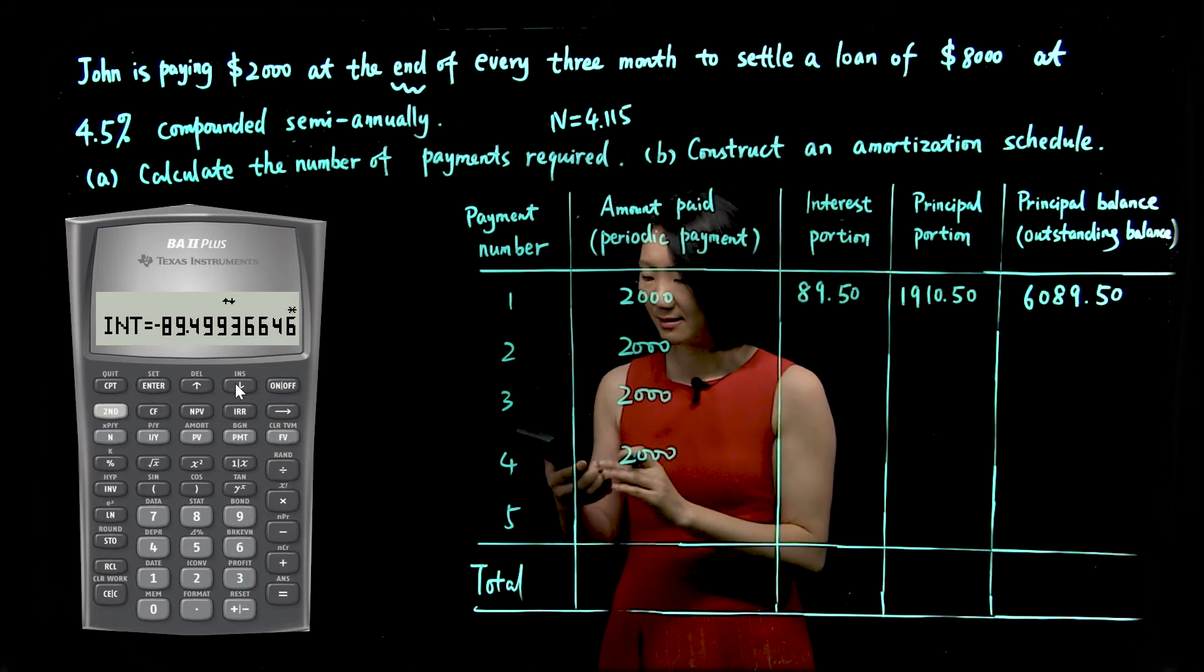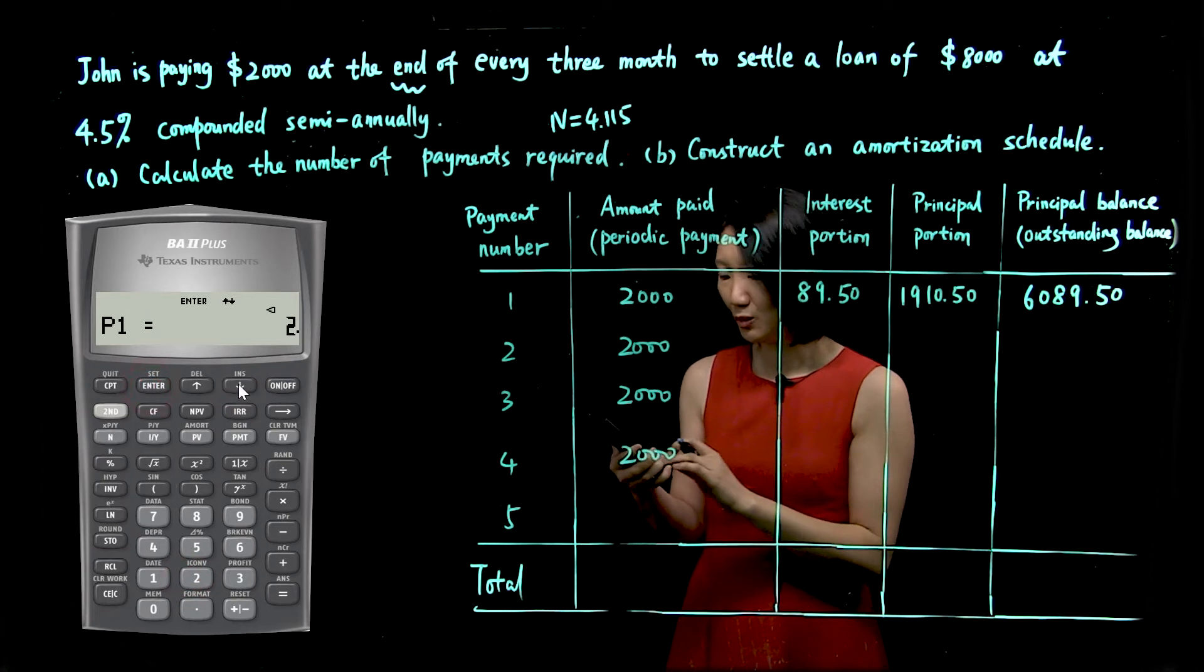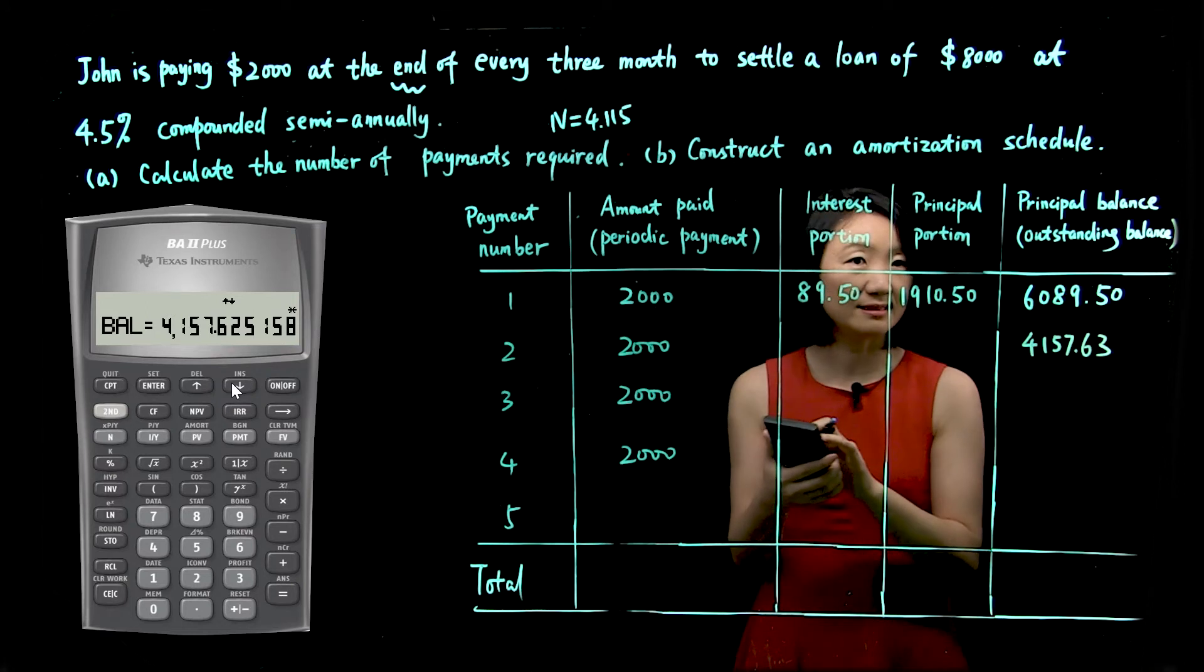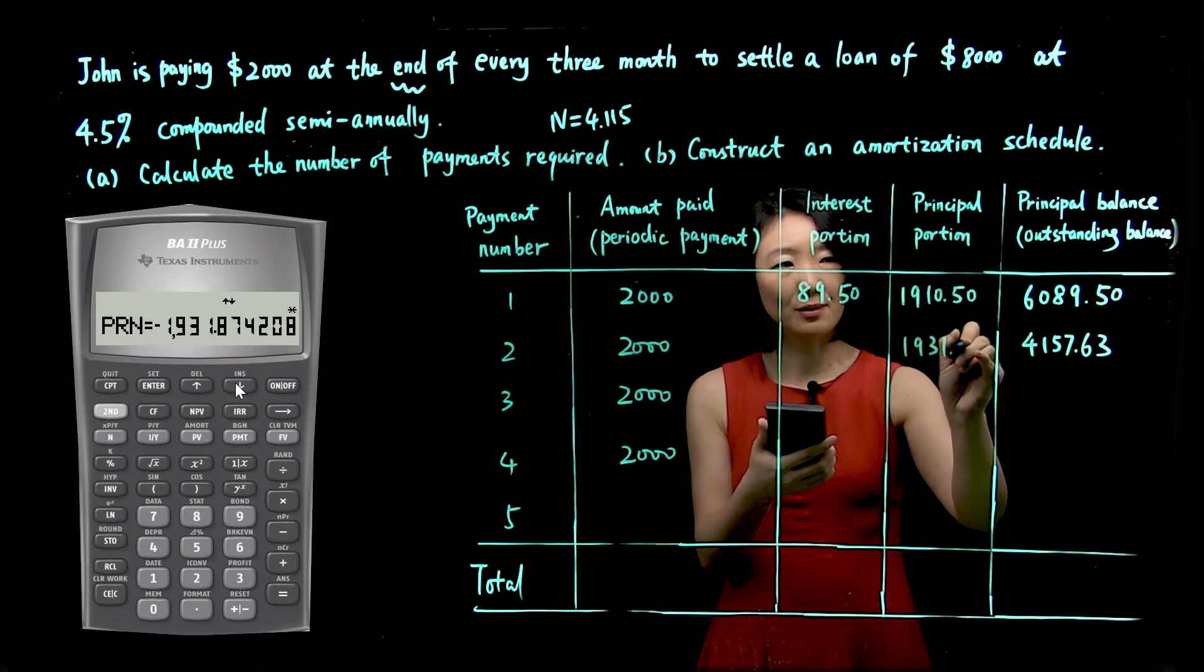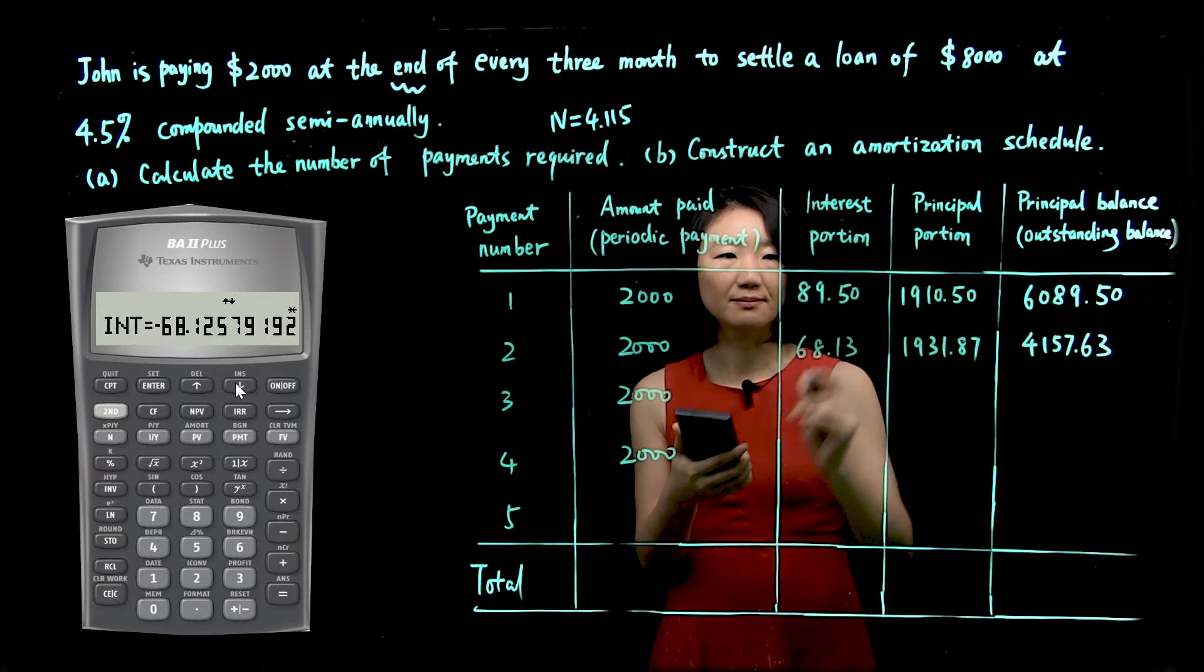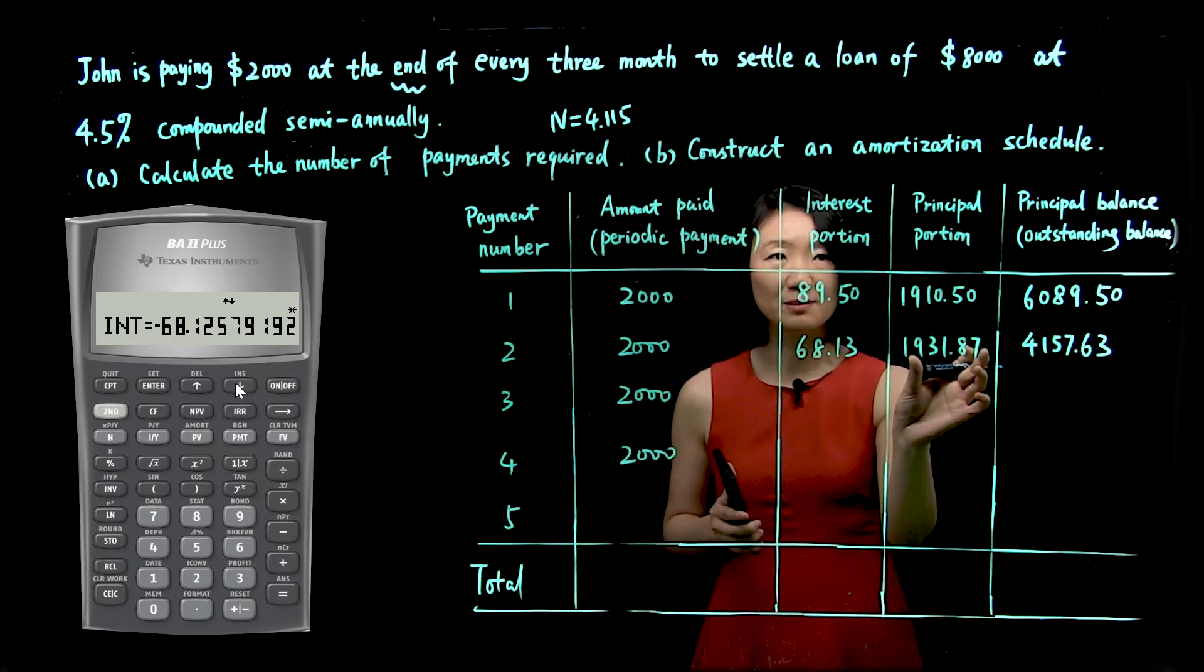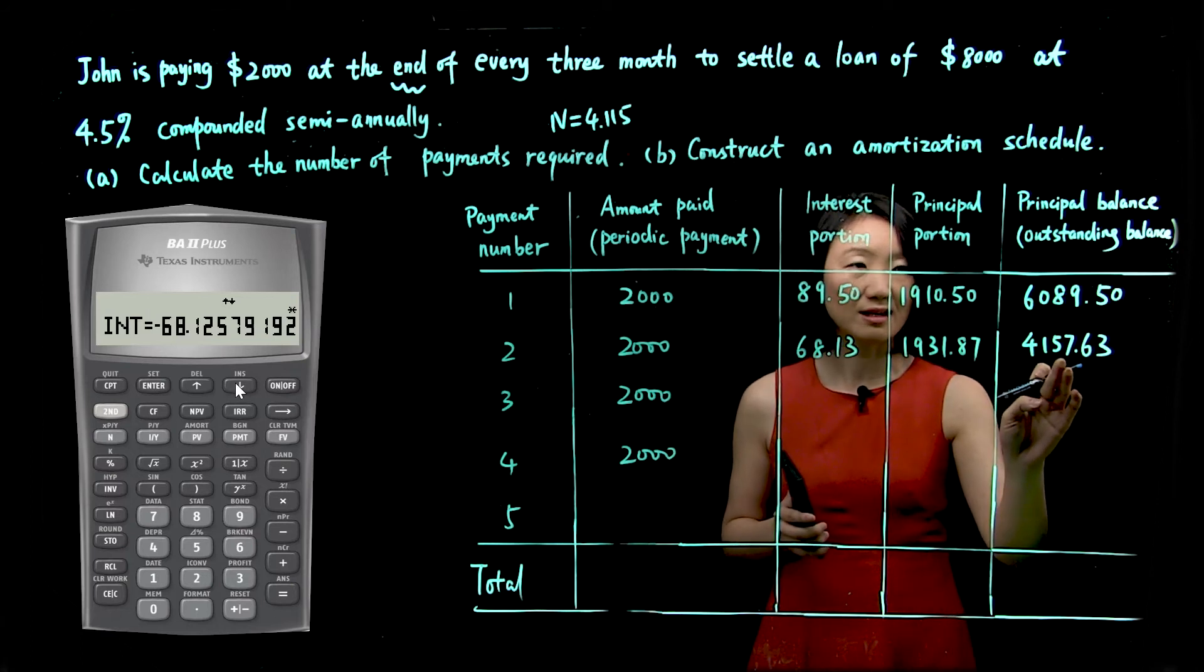In order to calculate for second payment, let's scroll down again. You'll see P1. This time P1 is 2, enter. P2 is also 2. Scroll down again, balance $4,157.63. We rounded the number to 63 cents. Scroll down again, principal is $1,931.87. For interest, $68.13. Again, rounded. All these numbers are rounded to two decimals. So that's for second payment, $2,000. Part of it goes to interest payment, part of it goes to principal payment. And after this payment, John has outstanding balance of $4,157.63.